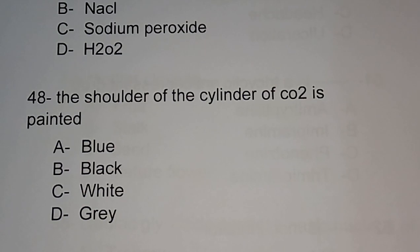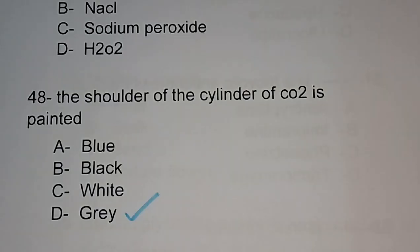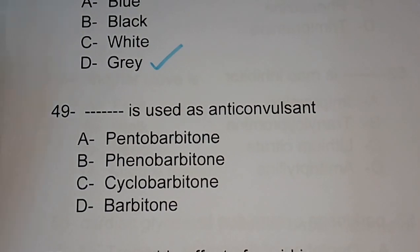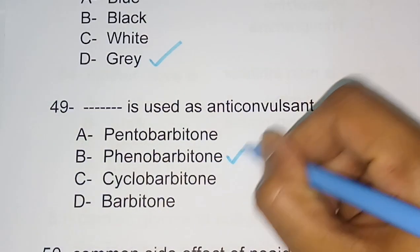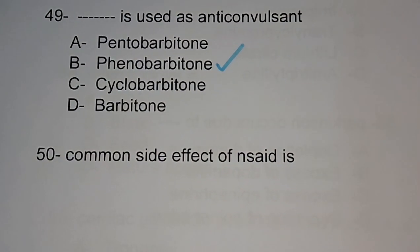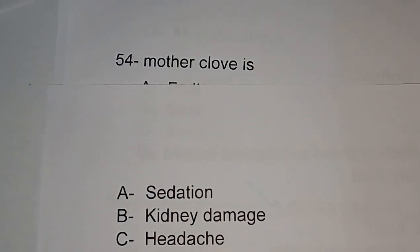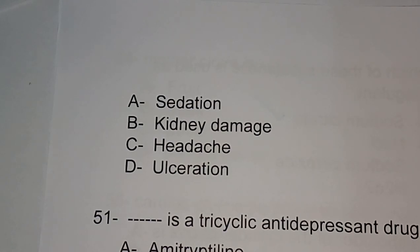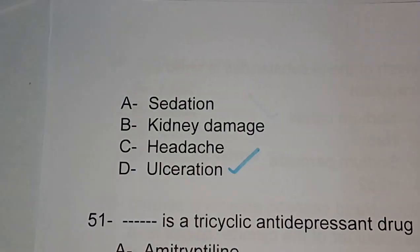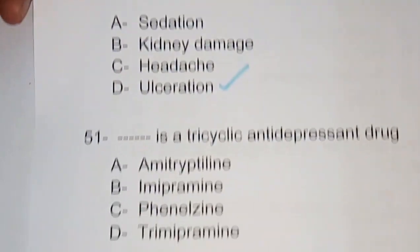Question number 49: which drug is used as an anticonvulsant? Options include phenobarbitone, cyclobarbitone, barbitone. Phenobarbitone is the correct answer. Question number 50: a common side effect of NSAIDs (non-steroidal anti-inflammatory drugs) — options are sedation, kidney damage, headache, ulceration. The correct answer is ulceration.